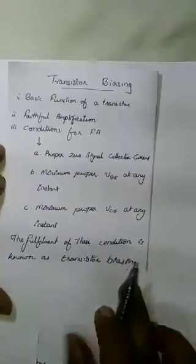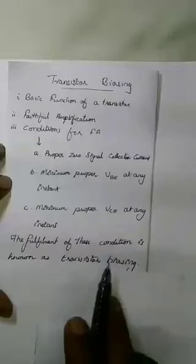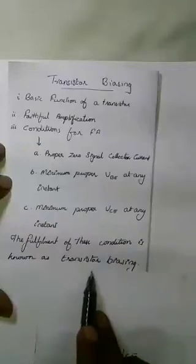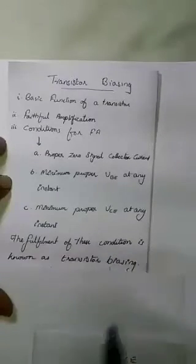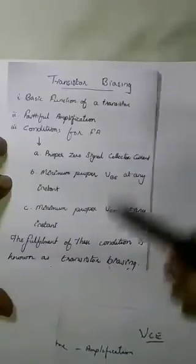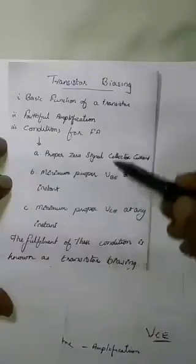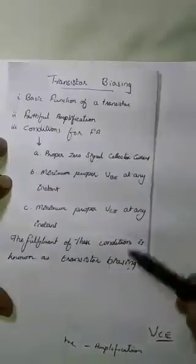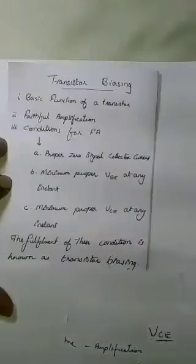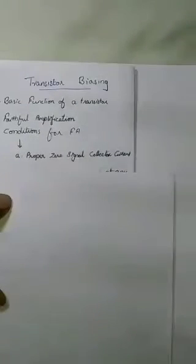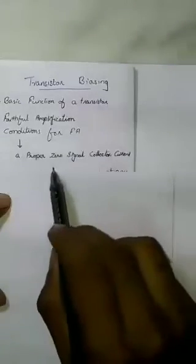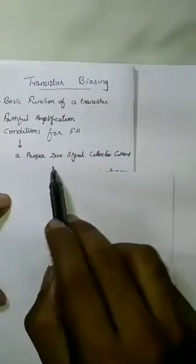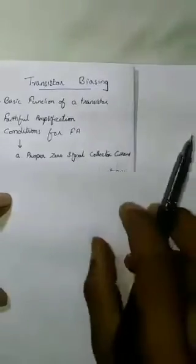The fulfillment of these conditions is known as transistor biasing. The first condition is for proper zero signal collector current — this requires a circuit where even with no input signal, a minimum collector current flows.